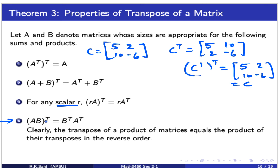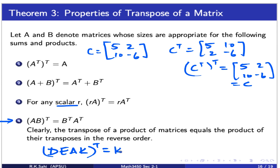A very important property: the transpose of a product of two matrices reverses the order. That is, (AB)^T = B^T A^T. This generalizes to any finite number of matrices: for example, (DEAK)^T = K^T A^T E^T D^T — you take all the individual transposes but multiply them in reverse order.